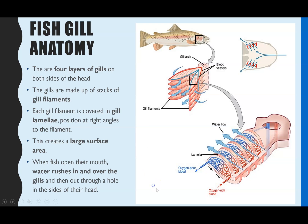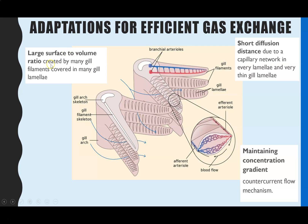For the large surface area, we have many gill filaments covered in many gill lamellae. For the short diffusion distance, there are two factors: the gill lamellae are very thin, and inside every gill lamellae there is a capillary network that is very close to the outside where oxygen diffuses in, also providing a short diffusion distance.